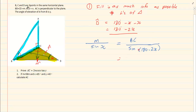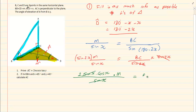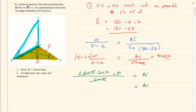Now sin(180 minus 2X) is the same as sin 2X. So we have M over sin X, and to get BC alone we multiply by sin 2X on both sides. From the double angle identity, sin 2X becomes 2 sin X cos X, multiplied by M over sin X. The sin X cancels out, and we get BC equals 2 cos X times M, or 2M cos X.